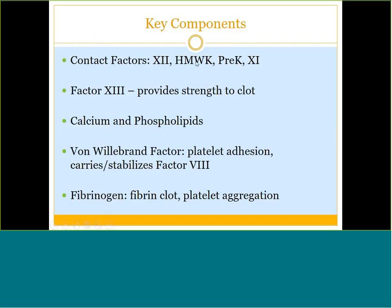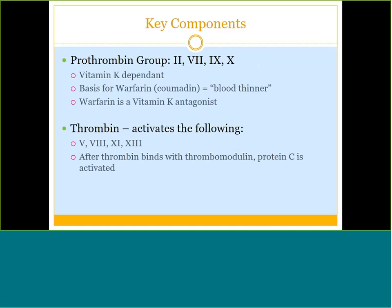The contact factor group is 12, HMWK, pre-K, and 11 — these four start the intrinsic pathway via contact with a foreign object. Factor 13's entire role is to provide strength to the clot, hence the name fibrin stabilizing factor. Calcium and phospholipids are absolutely important to clot formation and are spread throughout the pathways; factor 4 is technically calcium. Von Willebrand factor handles platelet adhesion and carries and stabilizes factor 8. Fibrinogen forms the fibrin clot and also plays a big role in platelet aggregation.